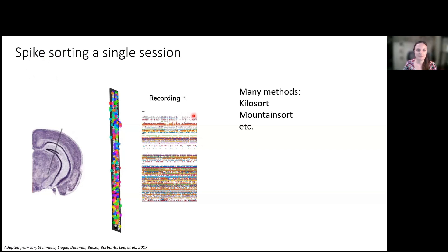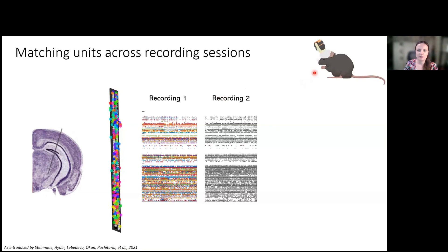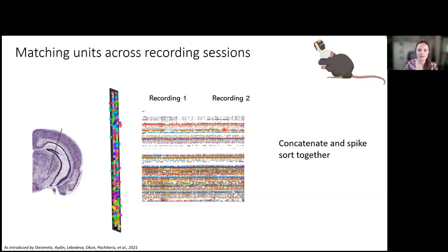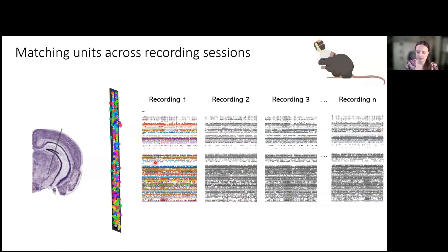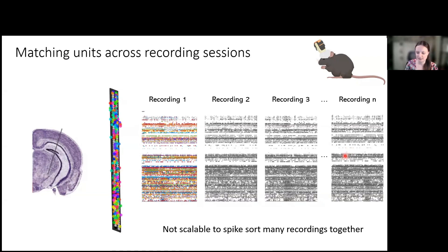So we're doing spike sorting. That has been introduced by Marius already and also by Nick. Normally, if we have a bunch of neurons next to a probe and a bunch of spikes, we want to know which spikes belong to which neurons, and we have spike sorting methods to do that. As Anna showed, if we have chronic recordings from the same populations of cells, we can stitch those two recordings together and spike sort them together. However, when we end up with many, many recordings — which is now possible — this problem is no longer scalable. Running spike sorting algorithms on so many datasets together is very cumbersome, and I tried it once and decided I don't want to do that anymore.